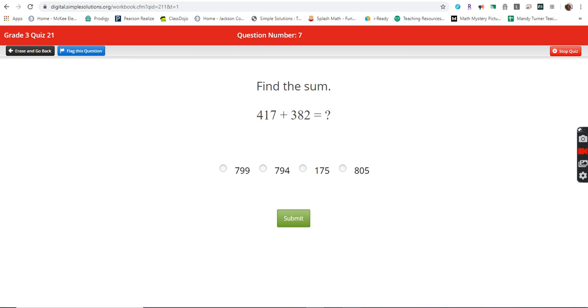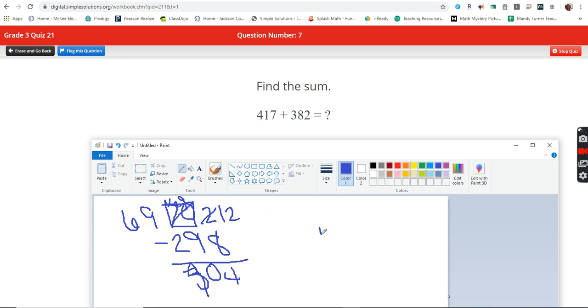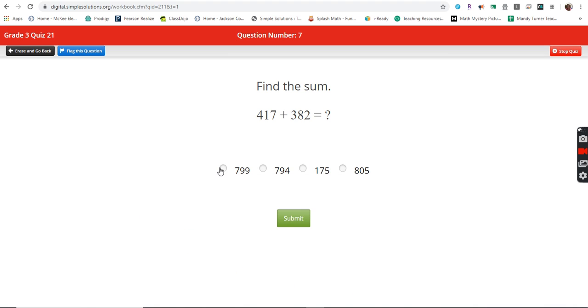Find the sum. 417 plus 382. Okay, so I'm going to come down, write it on my scratch paper. Seven plus two is nine. One plus eight is nine. Four plus three is seven. 799.